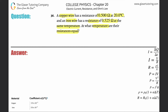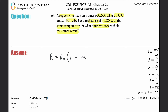Thinking about the nature of the information given — the resistance of copper is 0.5 ohms at a certain temperature, we have a different wire with a different resistance, and we're talking about changes in temperature where the resistances are equal — it's a good educated guess that we'd use the formula: the resistance of a material equals the initial resistance multiplied by (1 plus the temperature coefficient times the change in temperature).